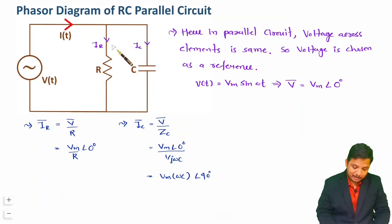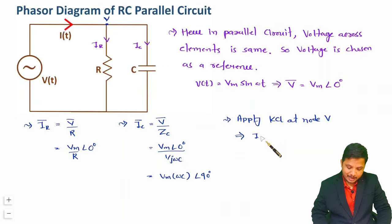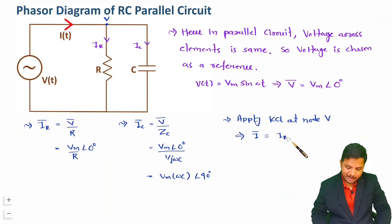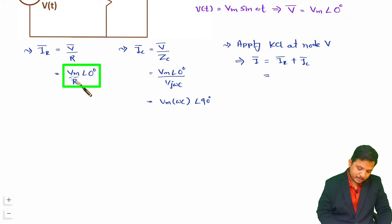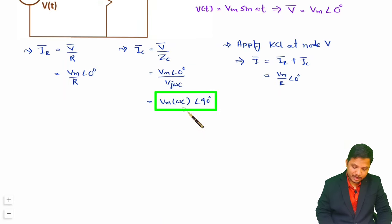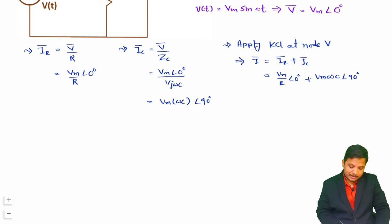Now we have currents IR and IC. Applying KCL at node V: the entering current I equals the leaving currents IR plus IC. So in phasor form, Ī = ĪR + ĪC, where ĪR = (Vm/R)∠0° and ĪC = Vm·ωC∠90°. With current and voltage in phasor form we can now construct the phasor diagram for this RC parallel connection.